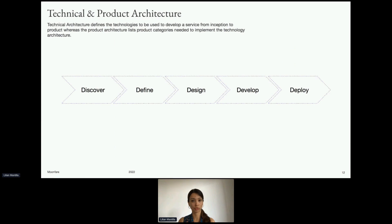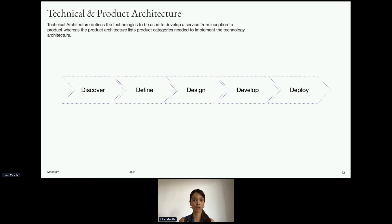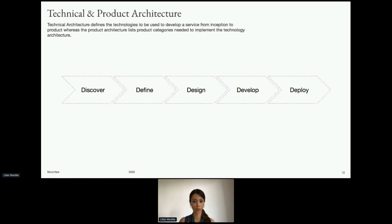Moving on, the technical architecture defines the technologies used to develop the service across the entire lifecycle: discover, define, design, develop, and deploy. Lastly, the product architecture involves the list of products available in the market to fulfill the technical architecture requirements.